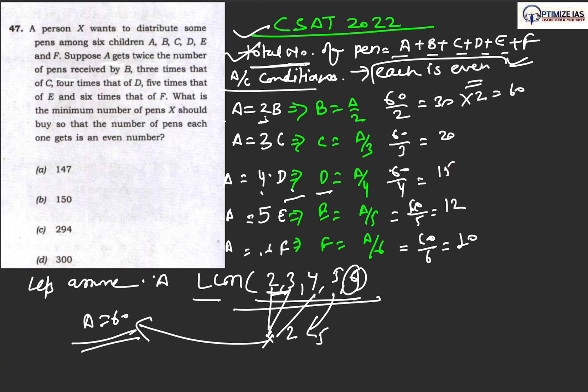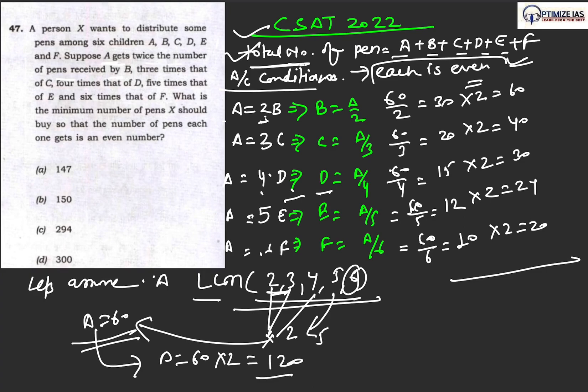So this becomes 120, this becomes 60, this becomes 40, this becomes 30, this becomes 24, and this becomes 20. Now each one is having even number of pens.